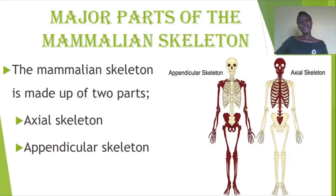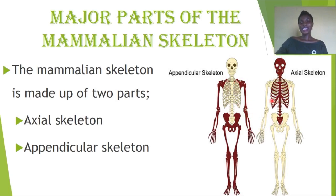Today we are looking at the major parts of the mammalian skeleton. Previously we looked at the axial skeleton, which comprises the skull and the vertebral column. The appendicular skeleton is what attaches to the axial skeleton — it consists of the various limbs and limb girdles. I hope you get the difference between the axial skeleton and the appendicular skeleton.